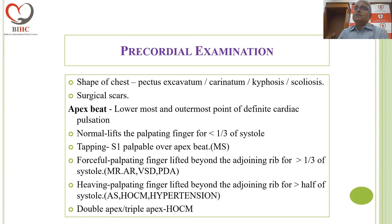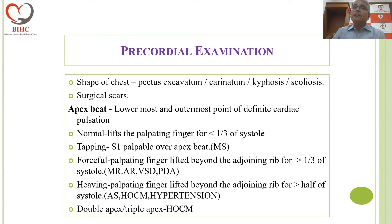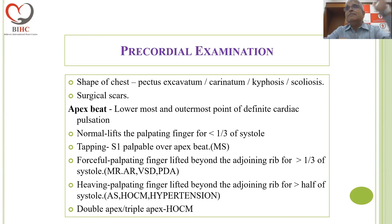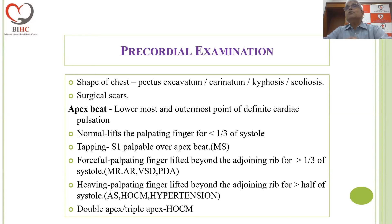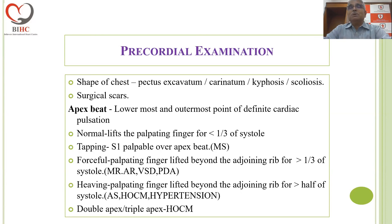You use the word tapping apex beat when there is a palpable shock of the first sound over the apex. You use the word forceful apex beat when the palpating finger is lifted beyond the adjoining ribs for more than a third of systole — typically seen in mitral regurgitation and aortic regurgitation. You use the word heaving apex beat where the lift is sustained for more than half the duration of systole — typically a feature of severe aortic stenosis or hypertension. In hypertrophic obstructive cardiomyopathy, there is a double apex beat because the LVOT obstruction slows down ejection, and when a palpable S4 is added, you get a triple apex beat.